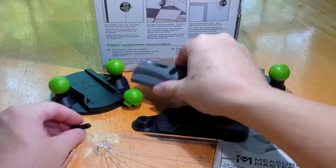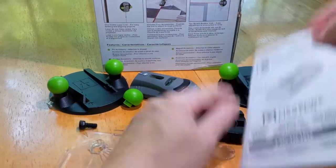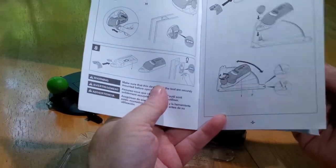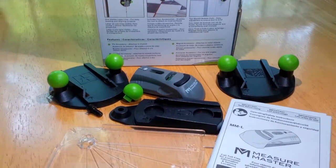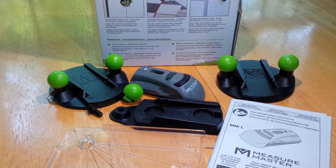So that's it. It comes with these directions, which are mostly pictures. That's just a quick view of the MeasureMaster MML.